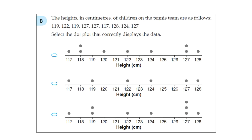Question 8. The heights in centimeters of children on the tennis team are as follows. So these are the numbers, I won't read them all out, you can all see them. So select the dot plot that correctly displays the data. The best way to do this is look at 119, that occurs twice. Now look at the options.